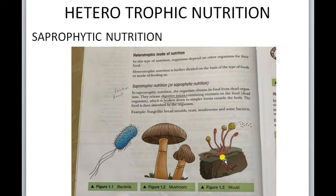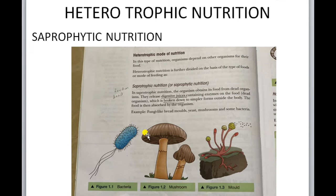This is the bread mould. Saprophytes release digestive juices on the dead organism and break down the macromolecules present in it — like carbohydrates, proteins, and fats — digesting these macromolecules into simpler molecules. Then they absorb the food and get energy.